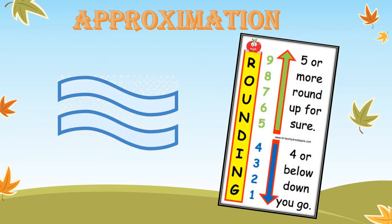Approximation and rounding have a rule. I'm looking for the place I wanted to approximate — I wanted to approximate to the nearest 10, so I will look at the 10s place. Then I will underline it and look at the number before it. What is the place before 10? It's the units. If the digit in the units place is 1, 2, 3, or 4, I will keep the number in the 10s place as it is. If the number is more than 4 — 5, 6, 7, 8, 9 — I will add 1 to the number in the 10s place. And I will replace the digit in the units place with 0.